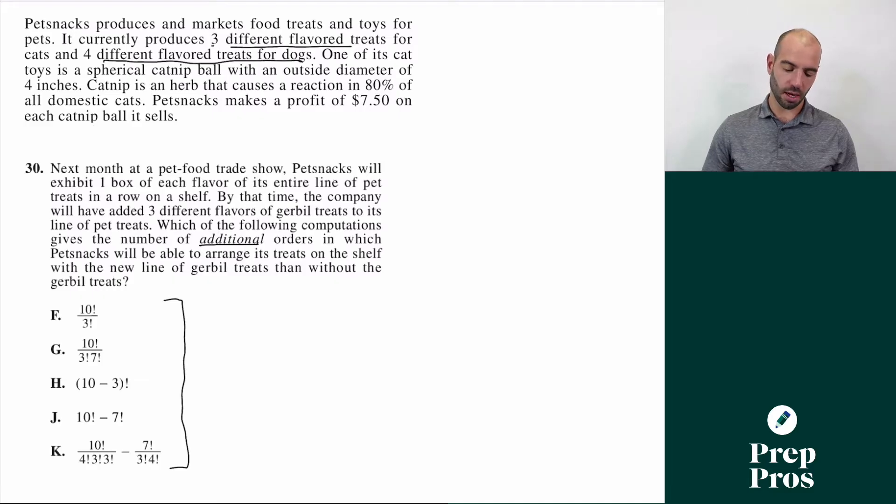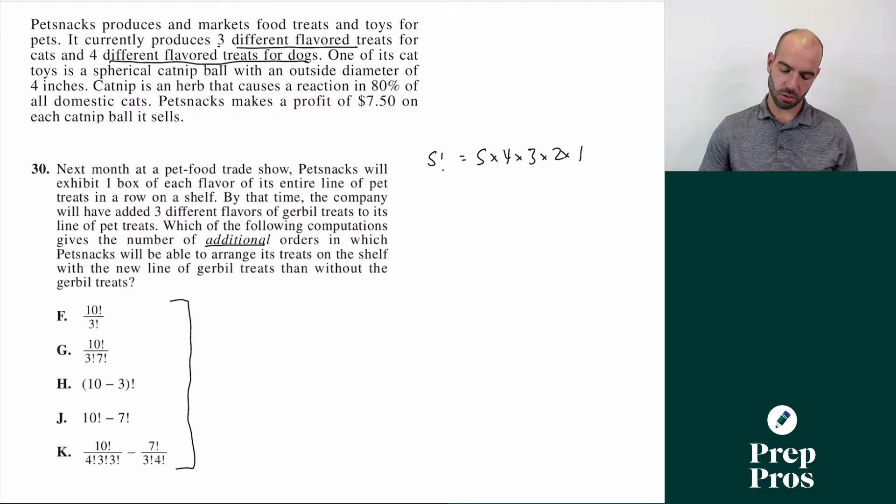I'll start with explaining what a factorial is. Something like the exclamation point is called factorial. Five factorial is the same as five times four times three times two times one. Or like seven factorial is the same as seven times six times five times four times three times two times one. So you first of all had to know what factorials are to even attempt solving this question. Beyond that, we also have to understand how that ordering works.